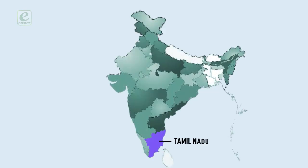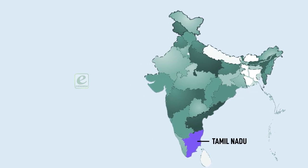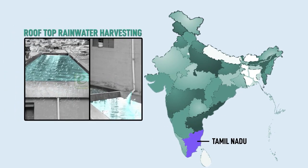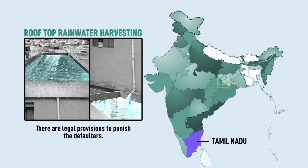Tamil Nadu is the first state in India to have made rooftop rainwater harvesting structures compulsory for all houses across the state. There are legal provisions to punish defaulters.